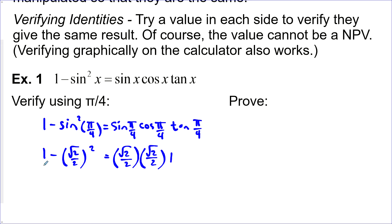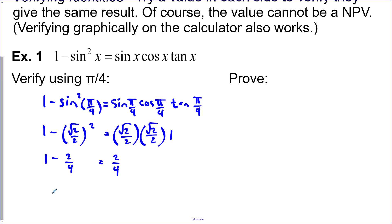Here we got 1 minus 2/4, or 1/2. And this one is 2/4. So we've got 1 - 1/2 = 1/2. That means 1/2 = 1/2. By verifying using π/4, this looks like a good identity.